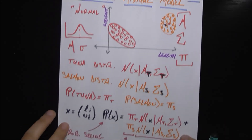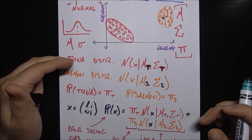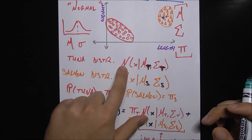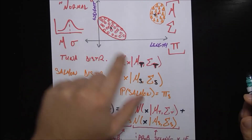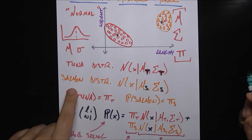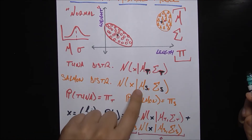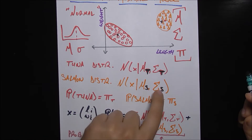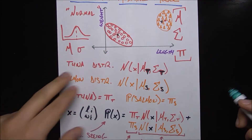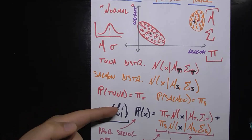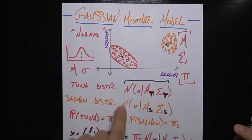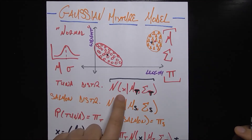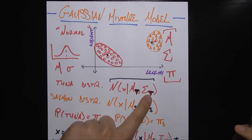To break it down more, the model assumes there's a tuna distribution, distributed normally with mean mu_t and covariance matrix sigma_t. We also assume there's a salmon distribution with mean mu_s and covariance matrix sigma_s. The vector x simply tells us the length and weight of any fish. So if I know something is a tuna, I know it's distributed according to mu_t and sigma_t.